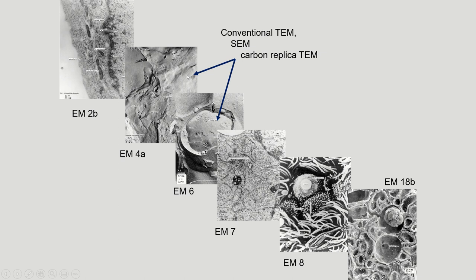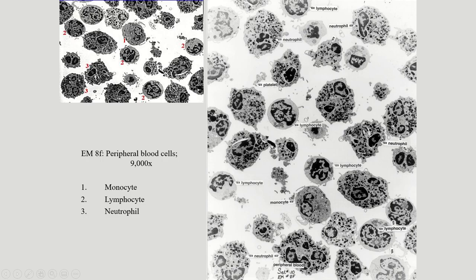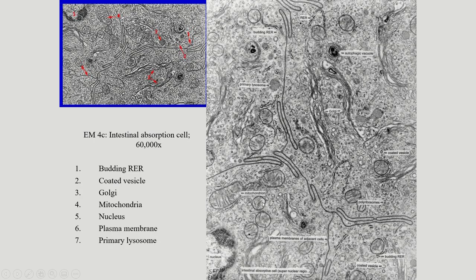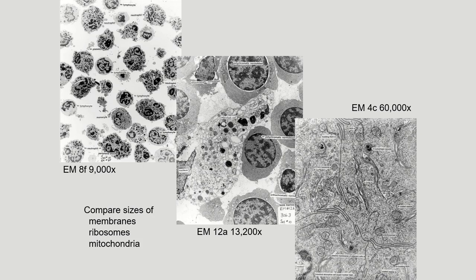Here are some more examples of conventional transmission electron microscopy. These are white blood cells and platelets in conventional TEM — you can see a lot more cellular detail. These are mitochondria here. Remember those tiny granules in the stomach? This is how big they are in electron microscopy. You've got rough endoplasmic reticulum all throughout here, ribosomes all throughout here that you can see in really good detail in conventional TEM.